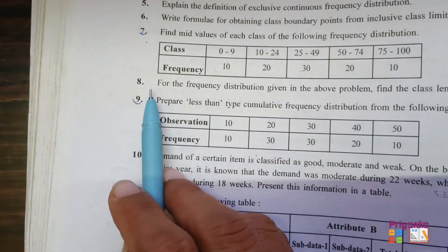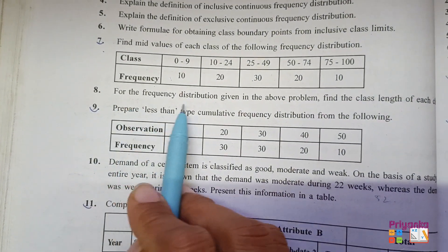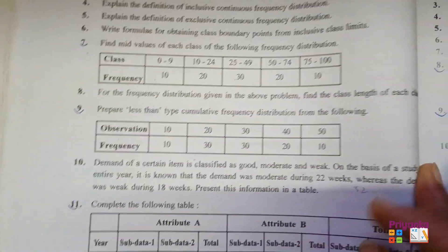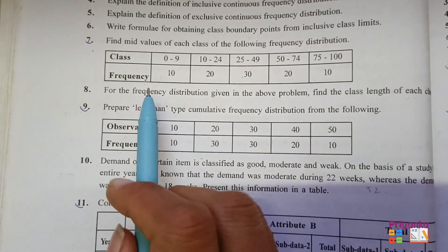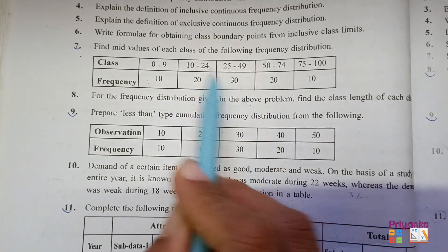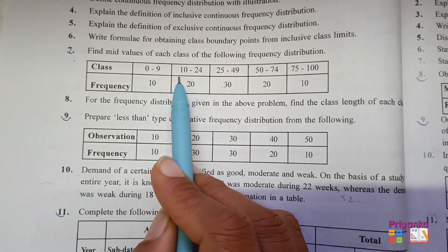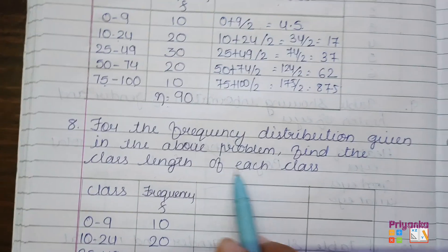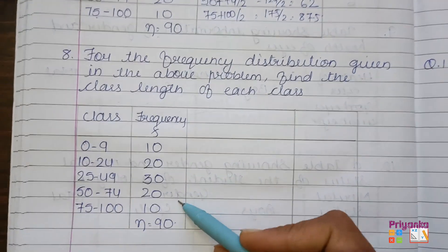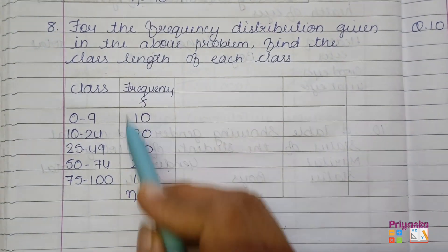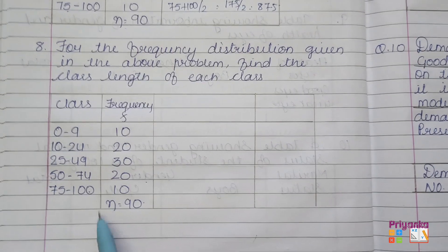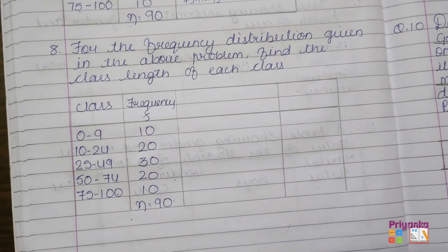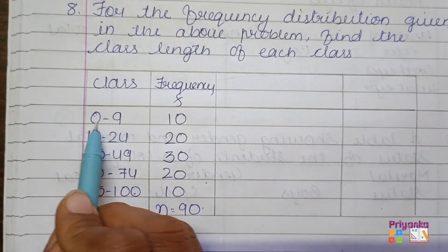Now we will go to question number 8: for the following distribution given in the above problem, find the class length of each class. The above problem refers to question number 7. Out of this, we are going to find out the class length using the same class and frequency. Class length means the distance of the class.